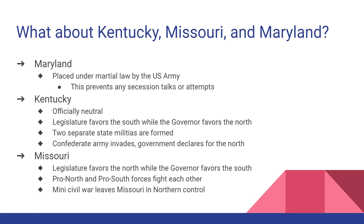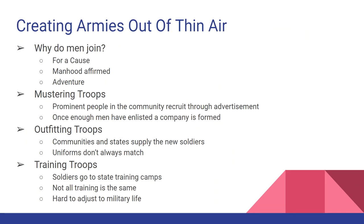Missouri, a strong slave state since the 1820s, was almost the opposite of Kentucky — its legislature favored the north while the governor favored the south. Pro-north and pro-south militias actually did fight each other, resulting in a four-to-five month miniature civil war within Missouri. While Missouri was fighting itself, the U.S. Army invaded and took Missouri over.